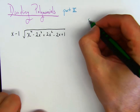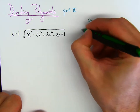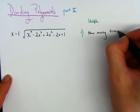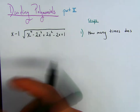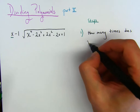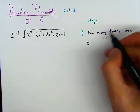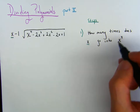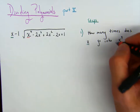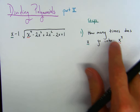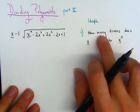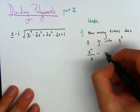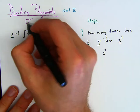What would be our first step or our first rhythm? What would I say first? How many times does this x go into this x to the fourth? The x to the fourth is on top and x is on the bottom. And if I were to divide these two, we get x cubed. So this x cubed goes up here.